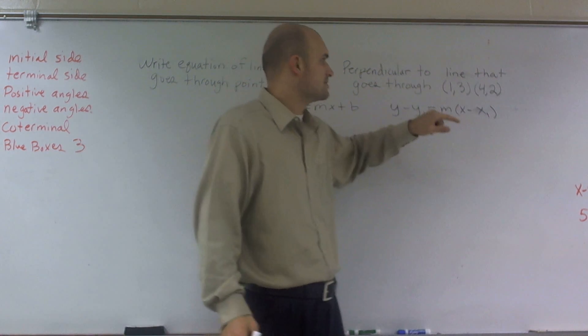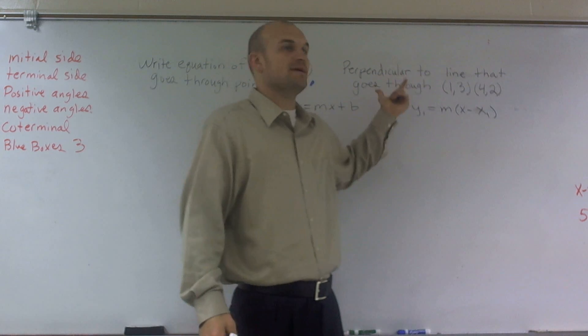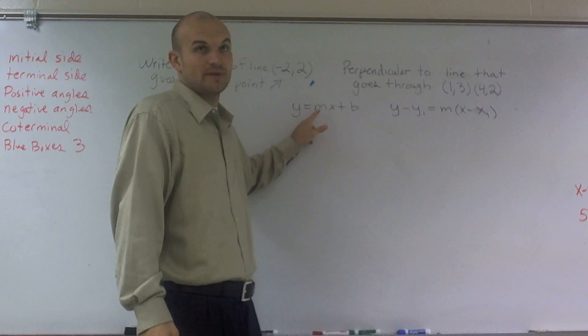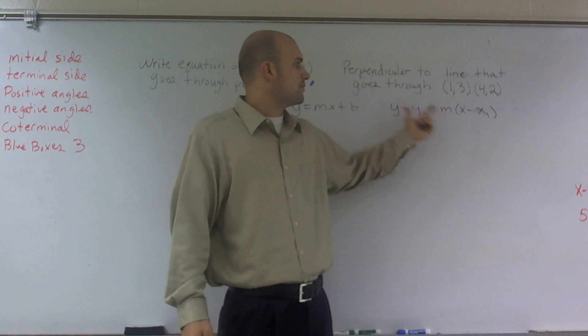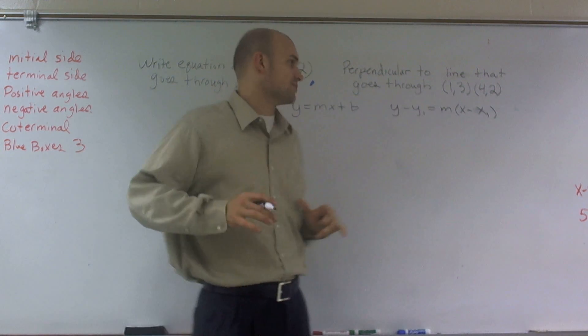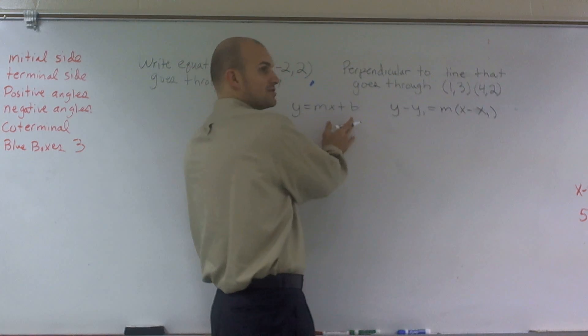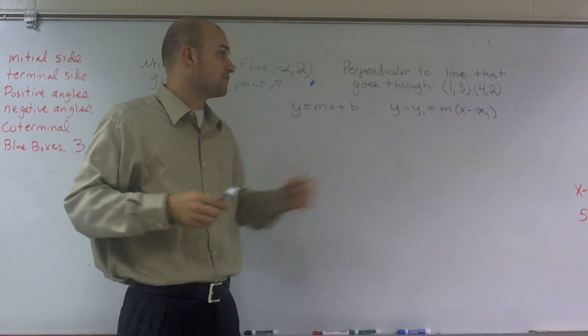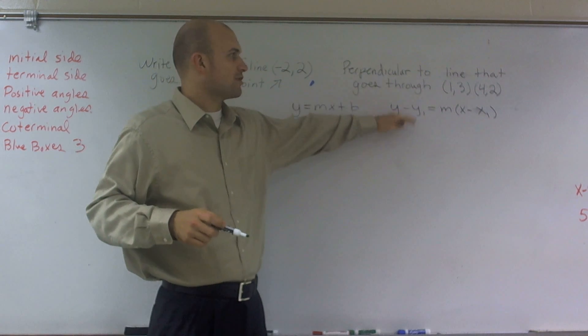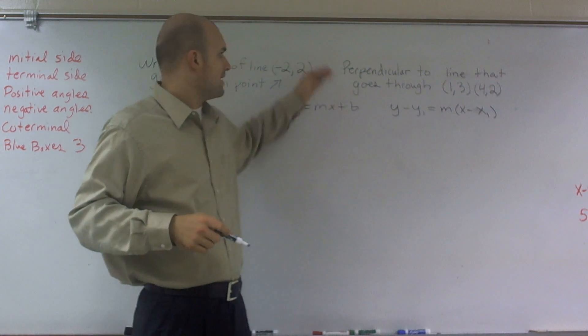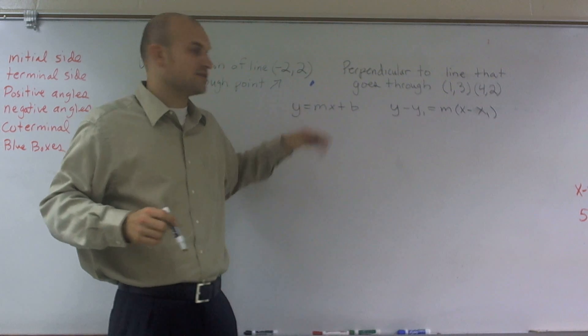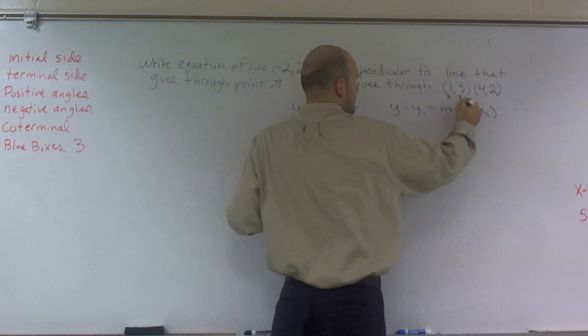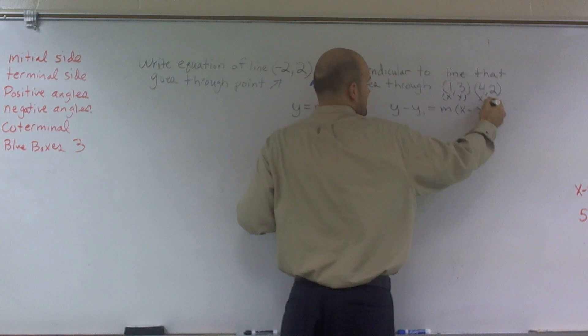When given two points, it's probably easiest to use the point-slope form. You can actually use both forms to solve this problem. But I'm going to use this form to solve this equation of a line, and then plug it into this equation. So first thing we need to do is find our slope. I'm going to label this xy and label this xy.